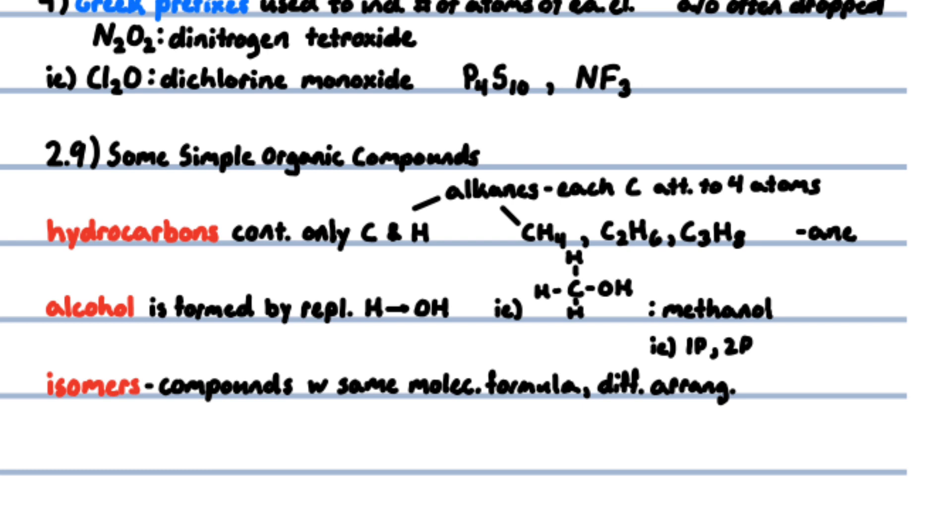Compounds that contain only carbon and hydrogen are called hydrocarbons. Alkanes are the simplest class of hydrocarbon—each carbon atom is attached to four other atoms: methane CH4, ethane C2H6, propane C3H8. Each alkane has a name that ends in -ane. Butane is the alkane with four carbons and ten hydrogens. An alcohol is a derivative of an alkane obtained by replacing a hydrogen atom of an alkane with an OH group. The name of the alcohol is derived from the alkane but with an -ol ending—for example, methanol, ethanol, and 1-propanol.